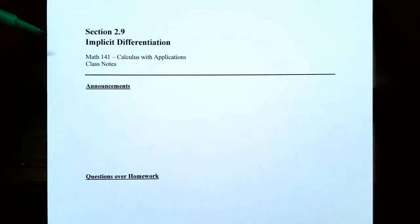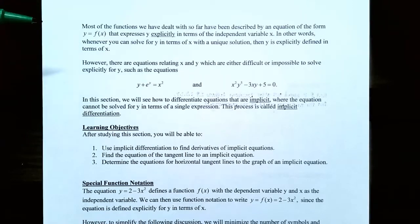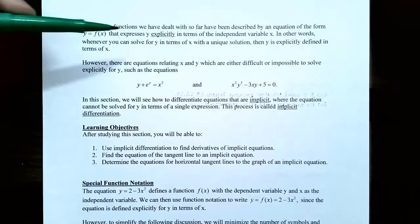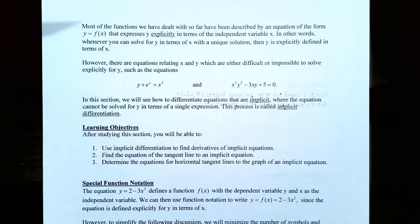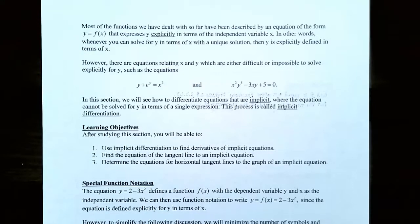Hi everyone, it's Professor Permanent and in this video we're going to talk about implicit differentiation. Most of the equations we've dealt with so far in the class can be described as y equals f of x, where y is explicitly in terms of the independent variable x. Y is called the dependent variable, x is called the independent variable. Whenever you can solve for y in terms of x with a unique solution, we say that y is explicitly defined in terms of x.